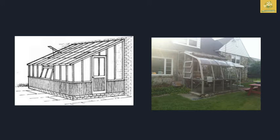The maximum height of the lean-to greenhouse can be up to 4 meters. The main disadvantage is that it has the lowest usable space. The cost is very low, which is an advantage of this type.